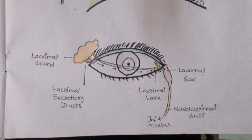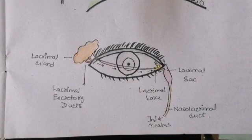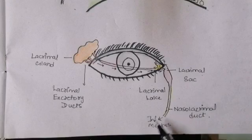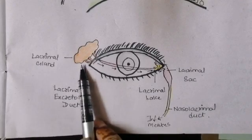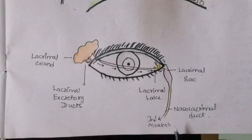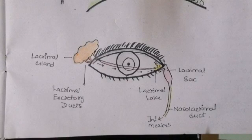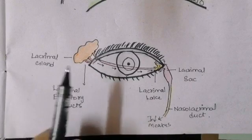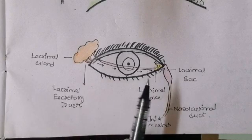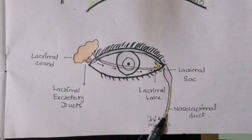The nasolacrimal duct opens into the inferior meatus of the nose, and the fluid drains into the nasal cavity. This completes the whole drainage pathway from the lacrimal gland through the nasolacrimal duct into the nasal cavity. Any blockage at the level of the excretory ducts or at the nasolacrimal duct can cause problems.